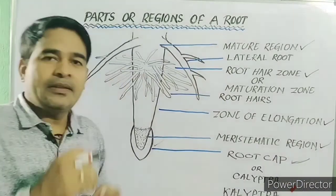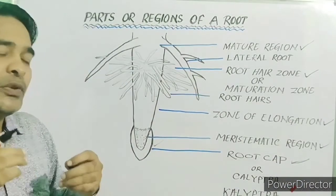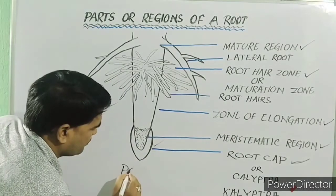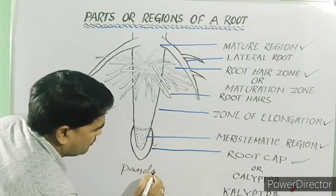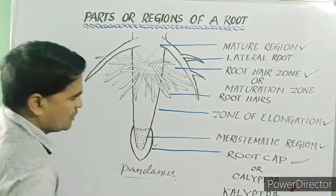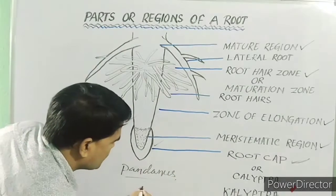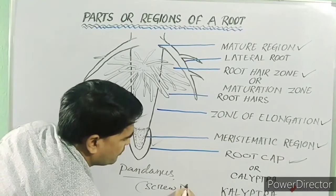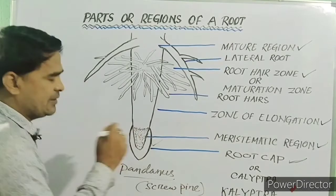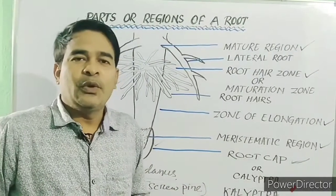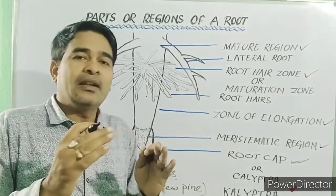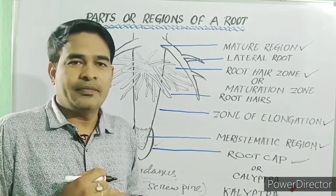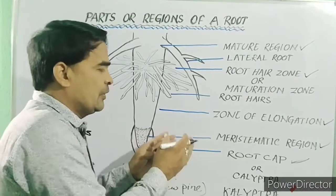There is a plant called screw pine or pandanus, which has multiple root cap. That means root cap has several layers. So, this is all about root cap.